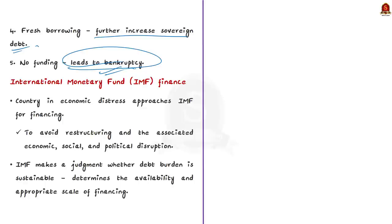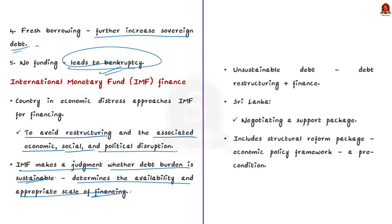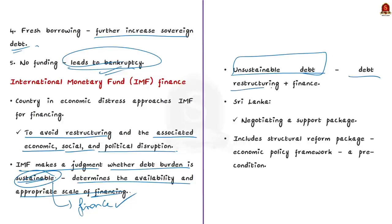When a country is in economic distress, it may go for debt restructuring. But if it is an IMF member, it first approaches the IMF for financing, aiming to avoid restructuring and associated disruption. IMF makes a judgment on whether the member's debt burden is sustainable. If sustainable, it may provide finance without a debt restructuring plan. If the debt is unsustainable, debt restructuring becomes inevitable. Sri Lanka has sought the help of the IMF, and they are currently negotiating a support package.